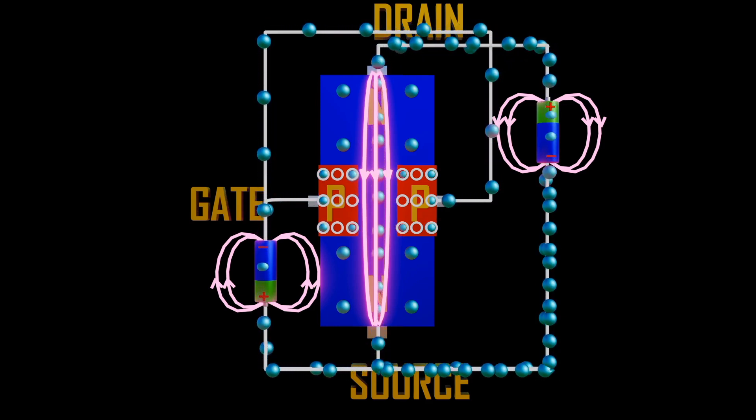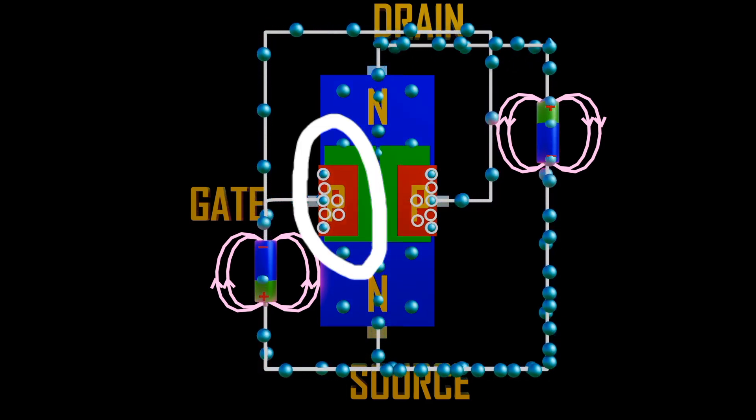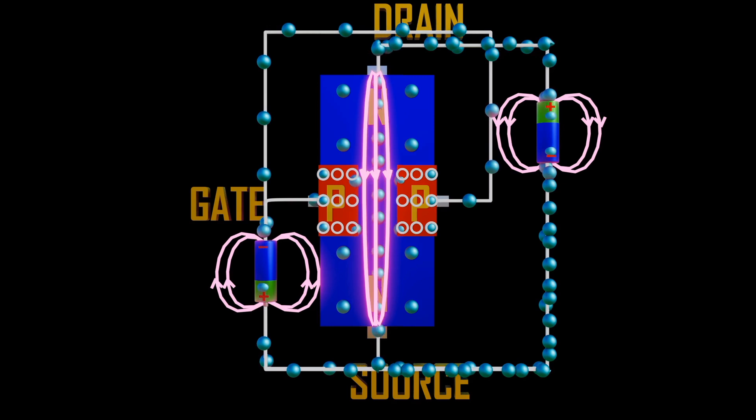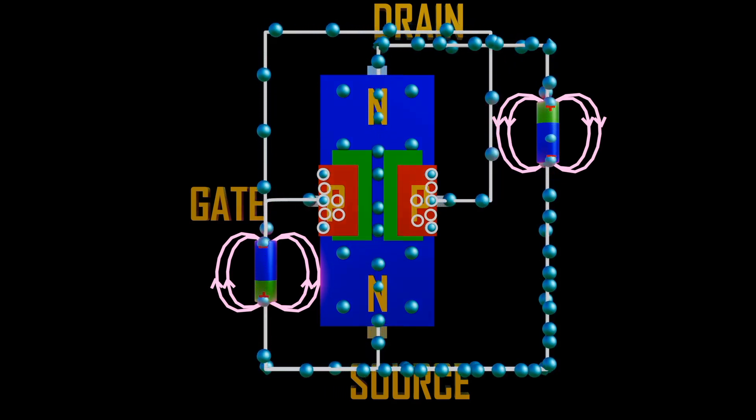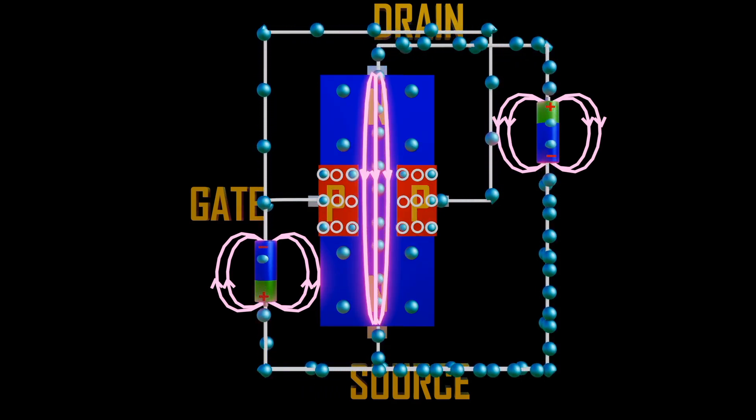When a larger voltage is supplied at the gate, the depletion region formed between the channel and the gate increases and penetrates the channel. Hence blocking the electric field, which further prevents current flow, similar to P-channel.